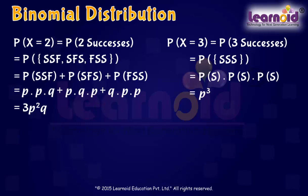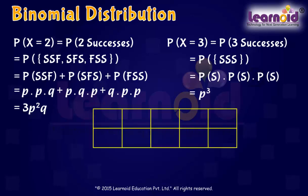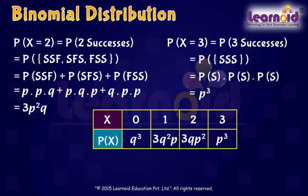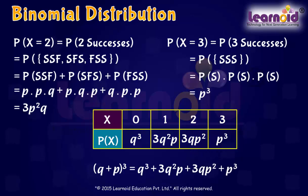Thus, the probability distribution of X denoting number of successes is established. Now let us see the binomial expansion of (Q + P) cubed as Q cubed plus 3Q squared P plus 3QP squared plus P cubed. Clearly, the probabilities of 0, 1, 2, or 3 successes are respectively the 1st, 2nd, 3rd, and 4th terms in the expansion of (Q + P) cubed.